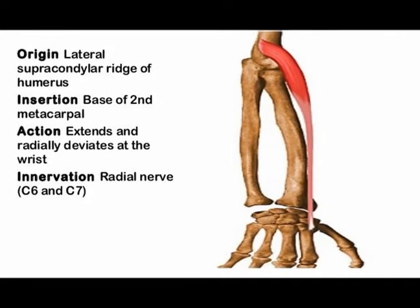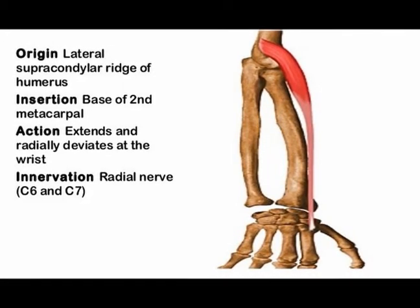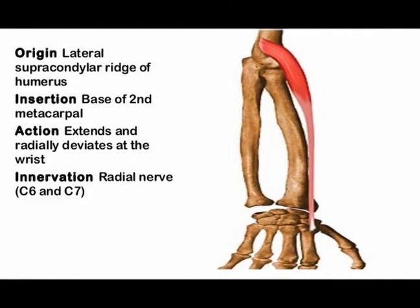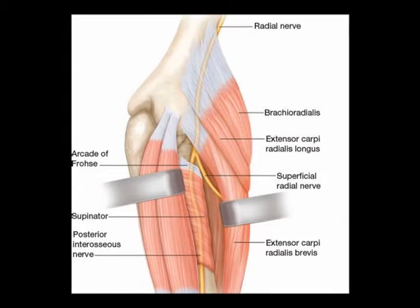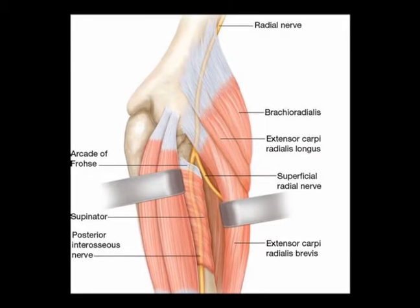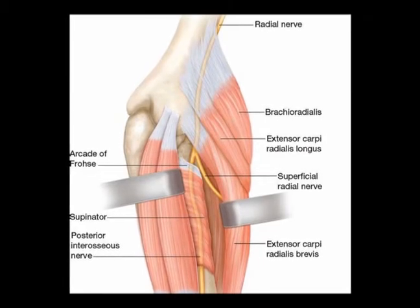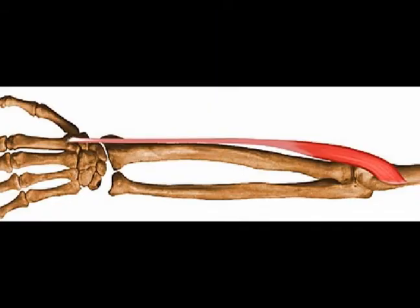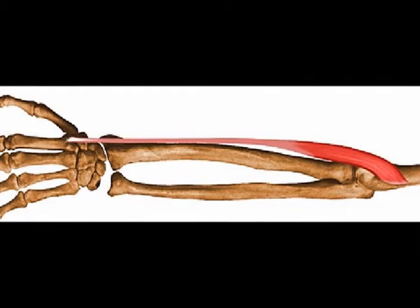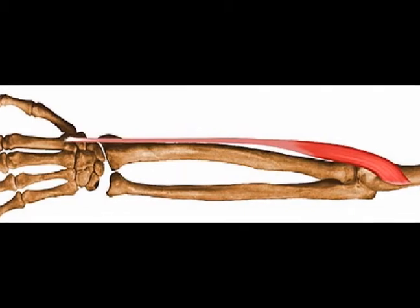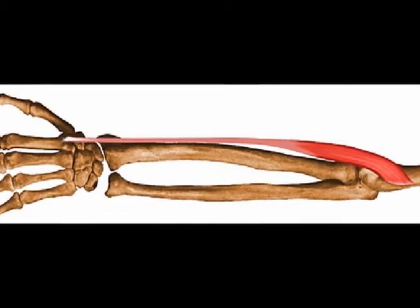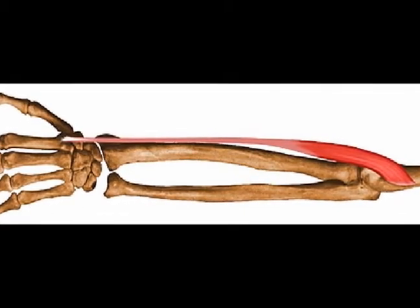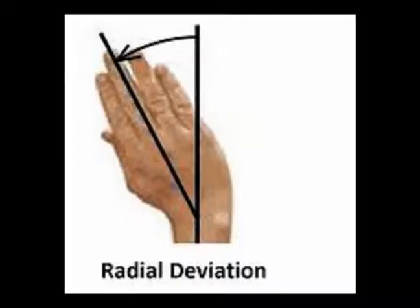The insertion is the dorsal base of the second metacarpal. The innervation is the radial nerve from vertebral levels C6 and C7. The concentric actions are wrist extension and radial deviation of the wrist.